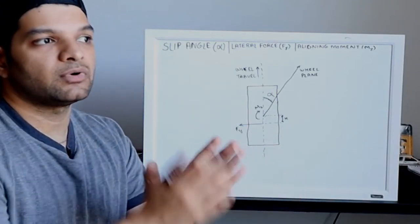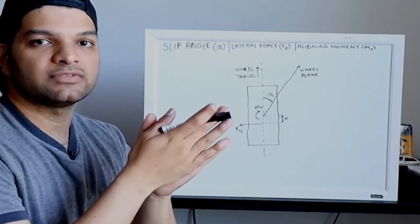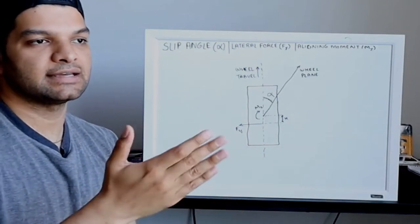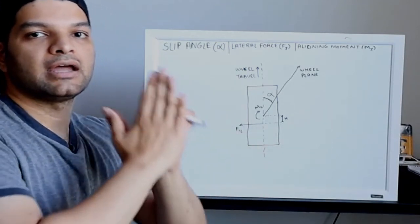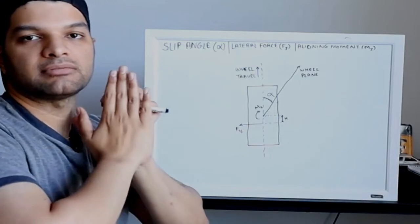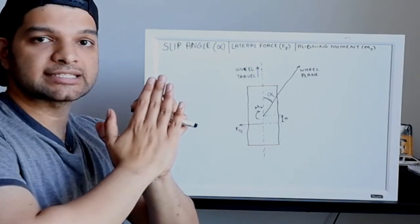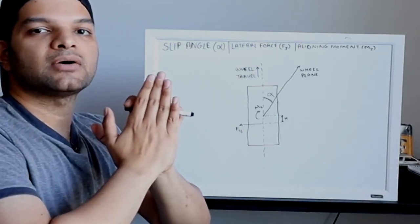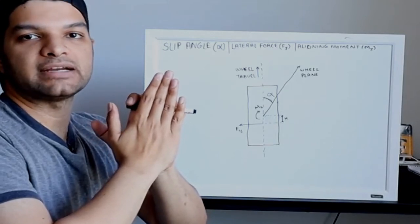So for easier understanding of this concept, consider this: use your hand and put it on your desk and try applying pressure on your hand on the desk and try to move your hand to either side, for example right hand side in this case.